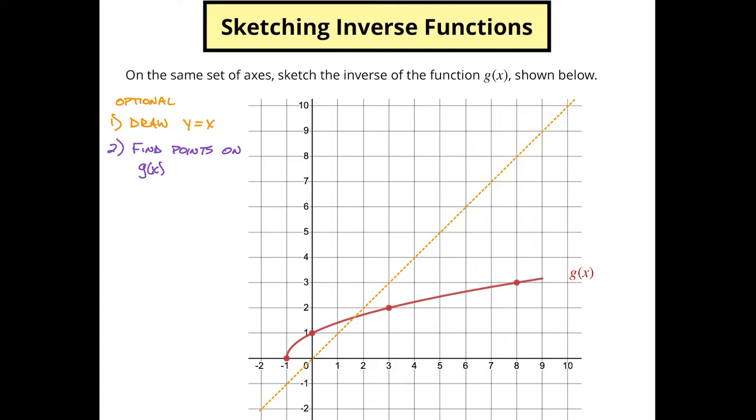But since I already have some indicated, I will just label them out here where I've got (-1,0), I've got (0,1), I've got (3,2), and I have (8,3).